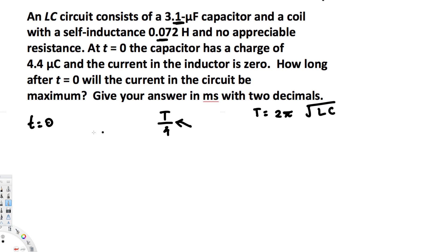The current will be maximum when the period divided by 4. So the maximum current occurs, and the time is going to be T/4, and we know that T equals 2π√(LC).